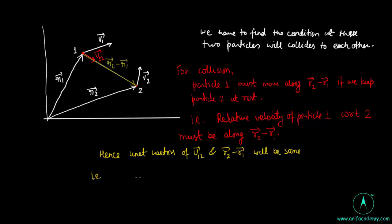That is, v12 vector upon mod v12, this is unit vector, will be equal to unit vector of r2 minus r1, that is r2 minus r1 upon mod of r2 minus r1.